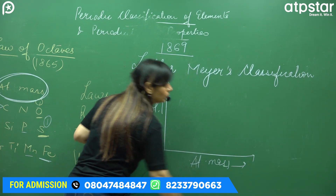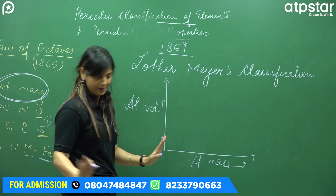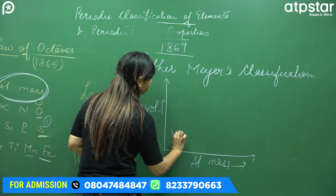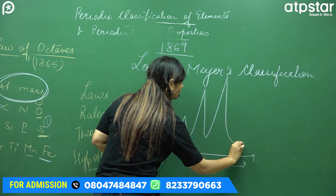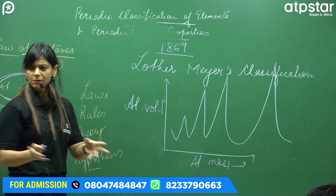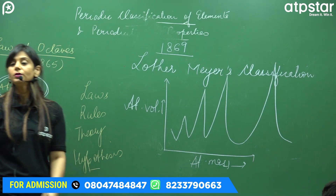The graph goes up, down, up, down. But basically, this is what remains: atomic volume and atomic mass plotted against each other.